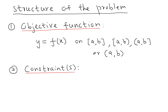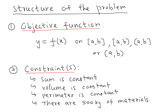There are also something called constraints for this problem. Those constraints can be like a constant sum, or maybe the volume is constant, or the perimeter is constant, or maybe if you want to make a product you can say there are 500 kilograms of a material. Those are what we normally call constraints. Under those constraints, you're going to find the maximum or minimum value of the objective function — what we normally call extreme values of the objective function.